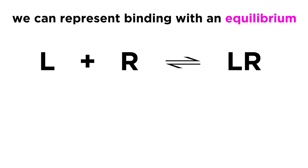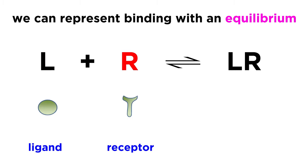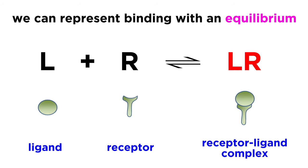Whichever the case may be, we can represent binding with this very simple equilibrium, which depicts some ligand L, referring to the drug, and R, referring to the receptor, in equilibrium with LR, which is the receptor-ligand complex, with the ligand bound to the active site.